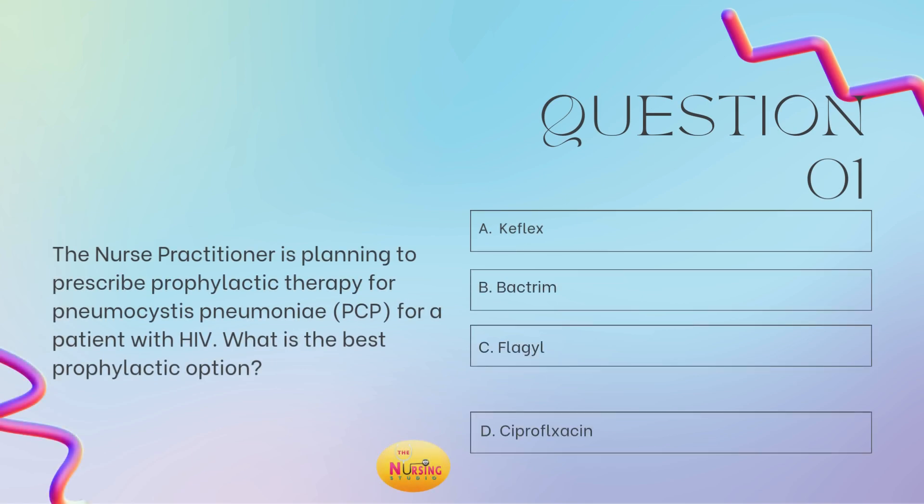The nurse practitioner is planning to prescribe prophylactic therapy for pneumocystis pneumoniae for a patient with HIV. What is the best prophylactic option? Is it A, Keflex; B, Bactrim; C, Flagyl; or D, Ciprofloxacin? Take a moment and tell me what you got in the comments, you guys.